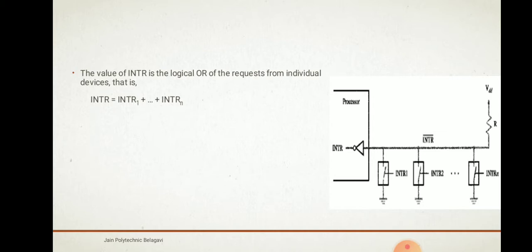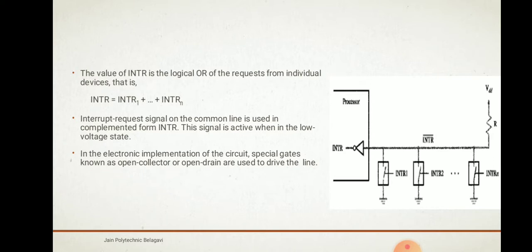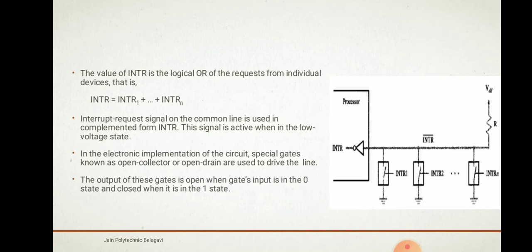If there are multiple interrupt requests, it will be a logical OR operation of INTR1 and the other interrupts. The interrupt request signal on the common line is used in complemented form; this signal is active in the low voltage state. In the electronic implementation, special gates known as open collector or open drain are used to drive the line. The outputs of these gates open when the gate input is zero and close when it is in the one state, so interrupt is active only in the one (closed) state.